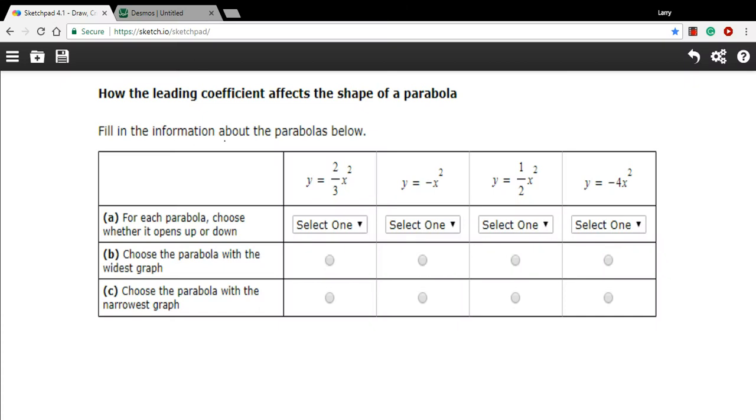In this problem, we're being asked to look at how the leading coefficient, that number multiplied by the highest term of a parabola, affects the shape of the graph. We have a variety of equations here, and we're being asked to show whether it opens up or down, which one's the widest, which one's the narrowest. So I think the best place to start is with a graphing program, just to investigate parabolas in general.